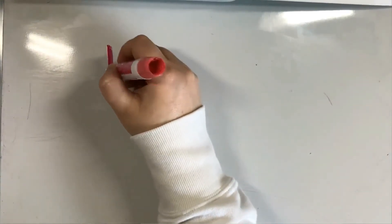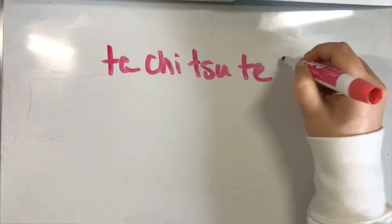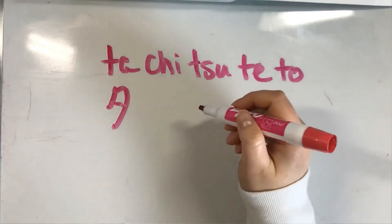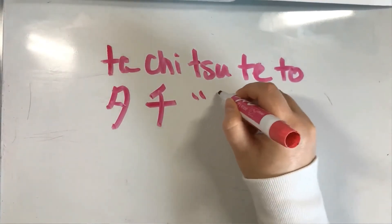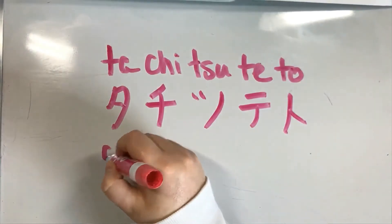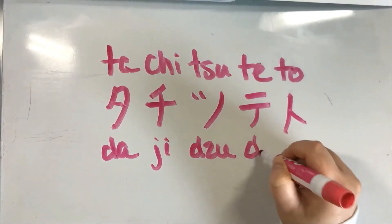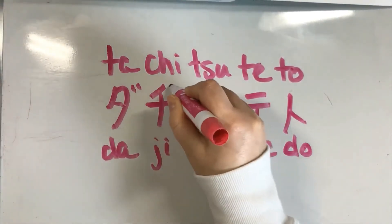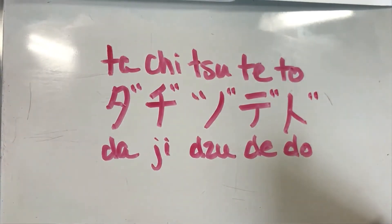Then we're going to do the ta characters. So we have ta — remember it was very similar to ku — chi, tsu, te, and to. That's going to become da, ji, zu, de, and do. Same idea — we're going to add quotes to those to change them.